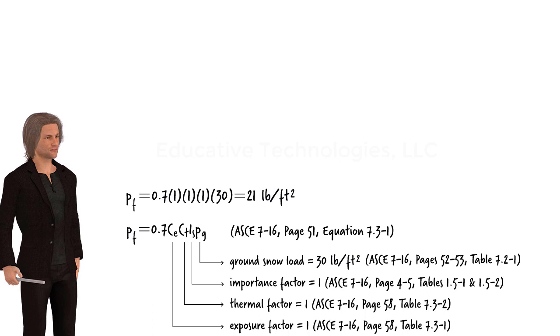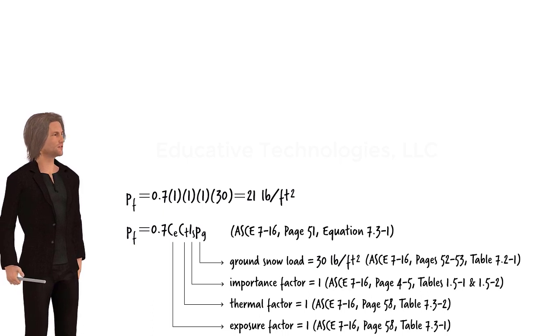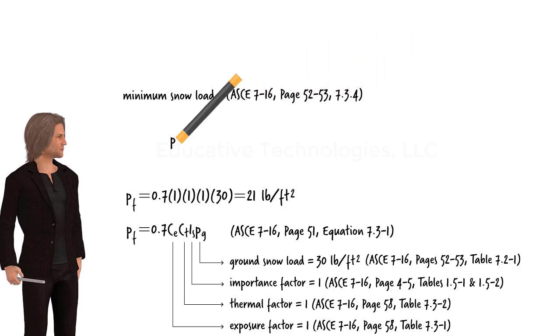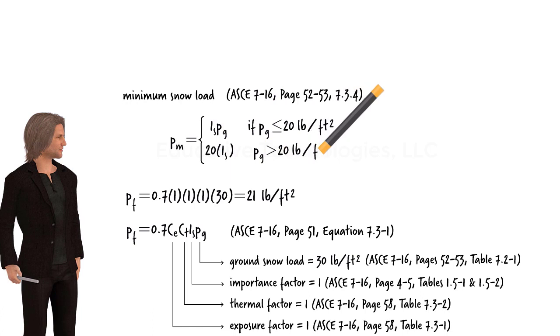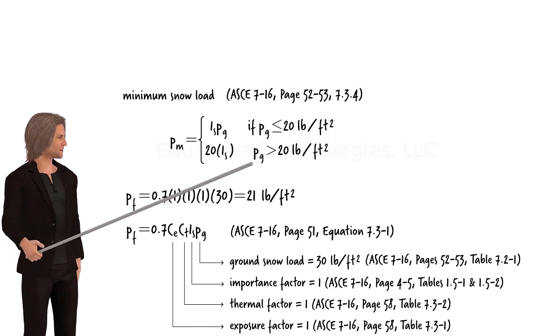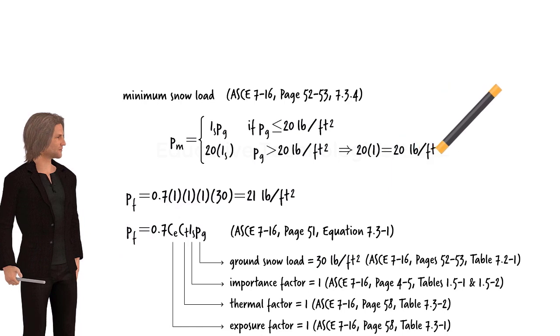For flat or low sloped roofs, we need to ensure that the design snow load exceeds the minimum required load. ASCE 7-16 provides the following equation for calculating the minimum snow load. In this case, P-G is greater than 20. Hence the minimum snow load is 20 pounds per square foot.